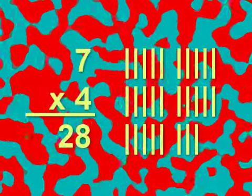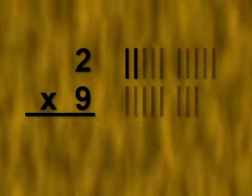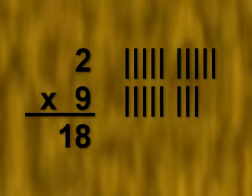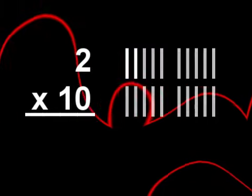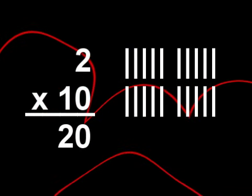7 times 4 equals 28. 10 times 0 equals 0. 2 times 9 equals 18. 2 times 10 equals 20.